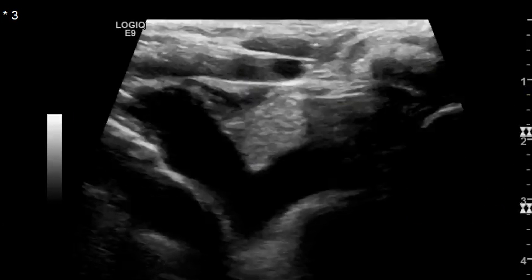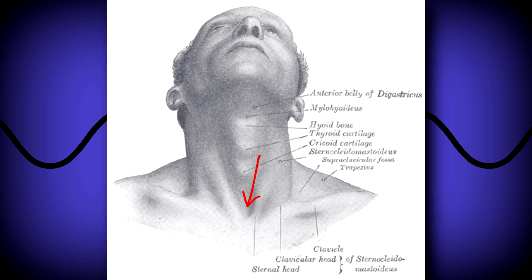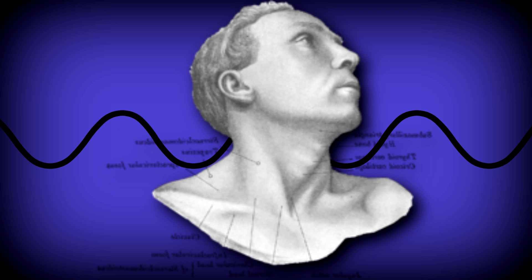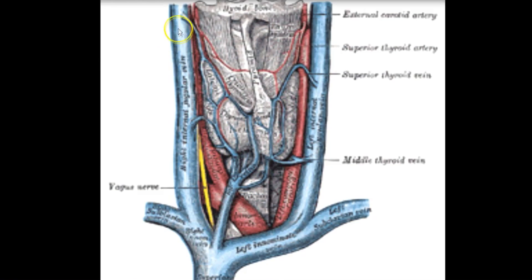Once you're done with the superior vena cava, repeat this step with the right and left brachiocephalic veins. This trio of vessels can be quite tricky for the beginner. Use the suprasternal notch and angle towards the heart. You'll use either a linear transducer or, in bigger patients, a small vector. Also use the patient's position — have them turn their heads to the right and to the left — and use paramedian approaches.